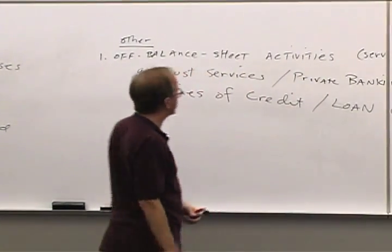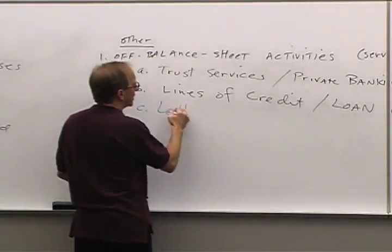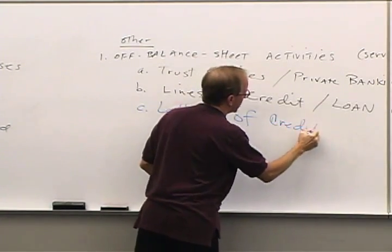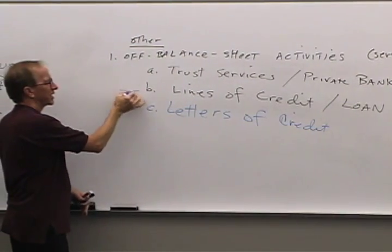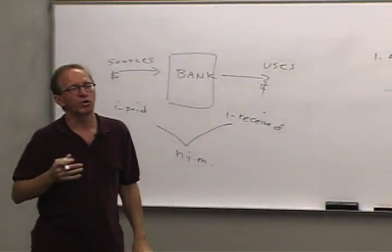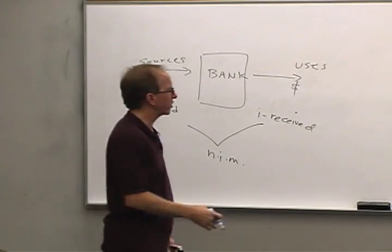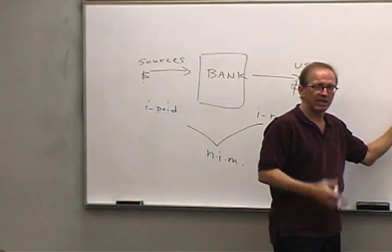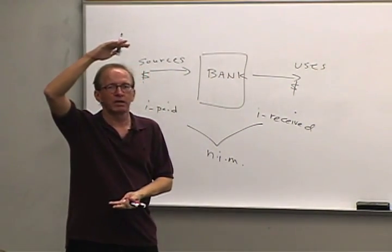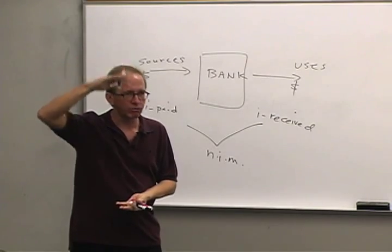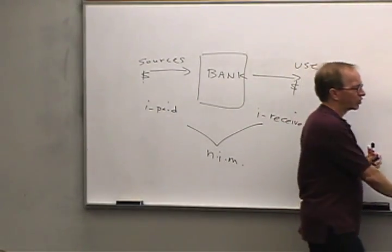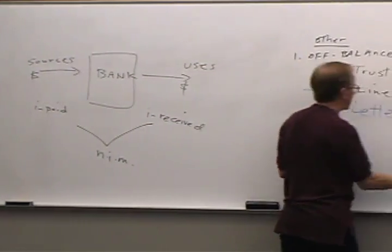Another service is letters of credit. The terminology for lines of credit: you've 'drawn on' or 'drawn down' your line of credit. If you had a $100 million line and take $5 million, you've drawn down five and still have 95. A letter of credit is mainly used by business borrowers, though in theory it could apply to anyone.